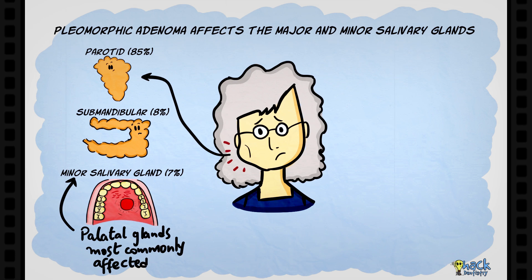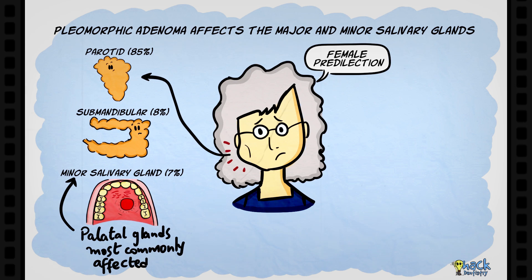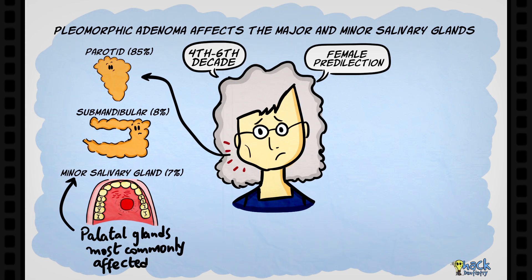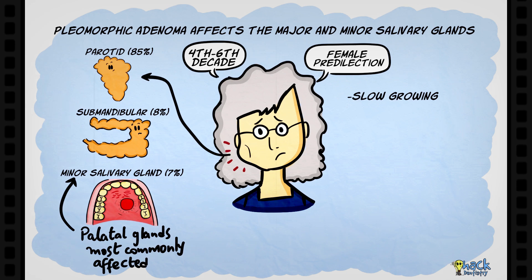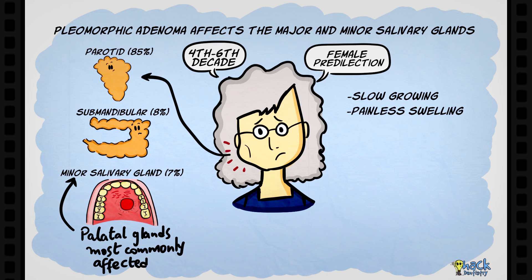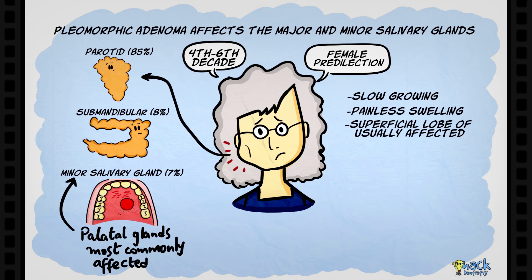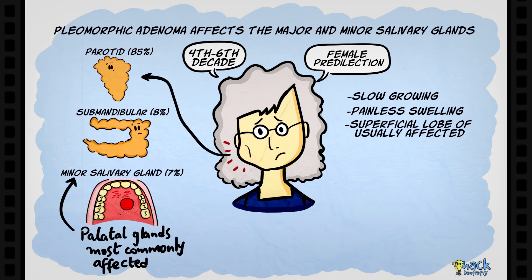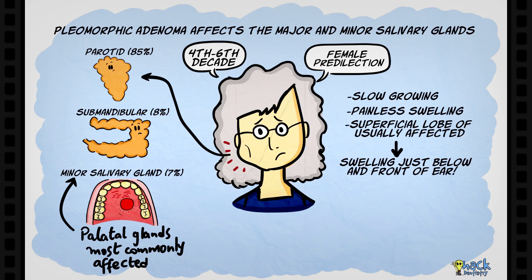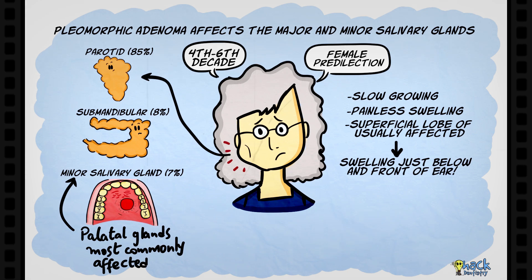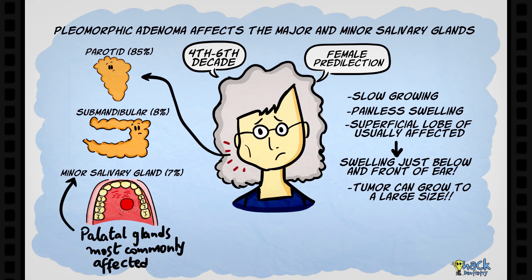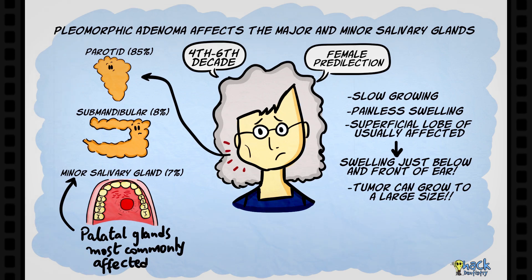This tumor has a female predilection and occurs in the elderly between the fourth to sixth decade. It presents as a slow-growing painless swelling, and the superficial lobe of the parotid gland is usually affected, with the swelling occurring just in front and below the ear. The tumor can grow to large sizes if left unattended.